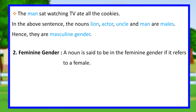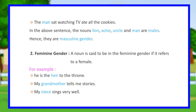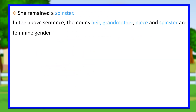Feminine gender: a noun is said to be in the feminine gender if it refers to a female. For example: she is the heir to the throne; my grandmother tells me stories; my niece sings very well; she remained a spinster. In the above sentences, the nouns heir, grandmother, niece, and spinster are feminine gender.